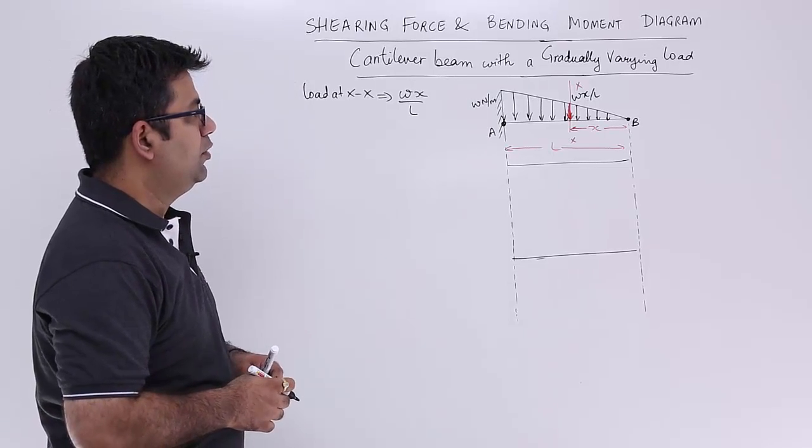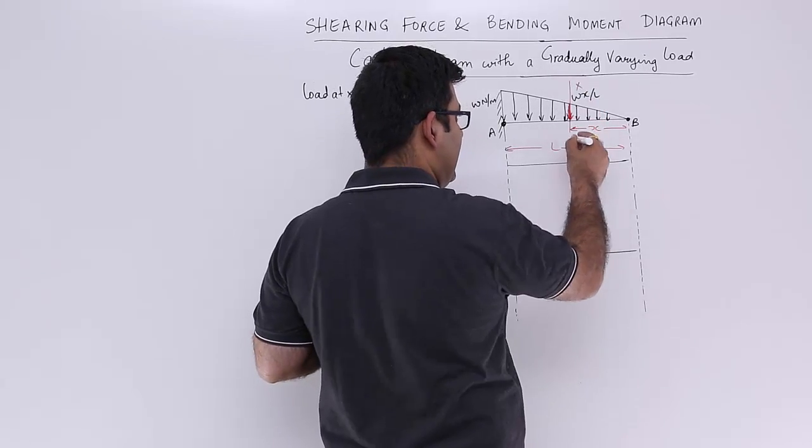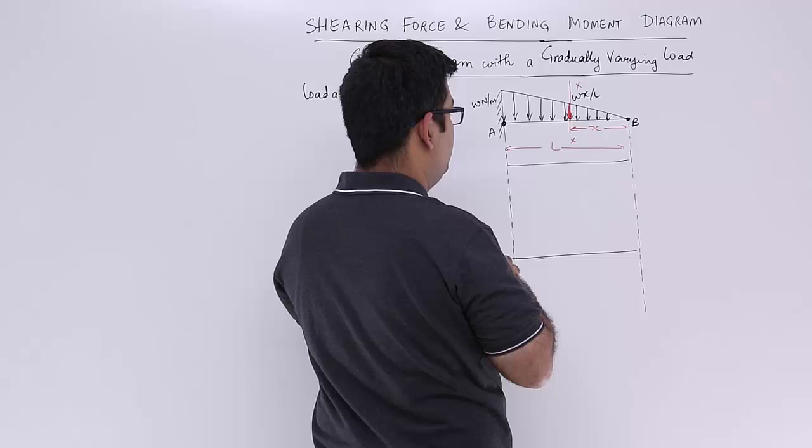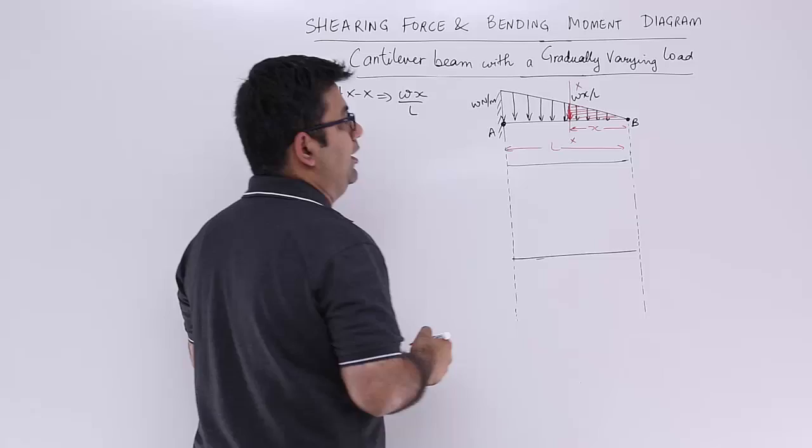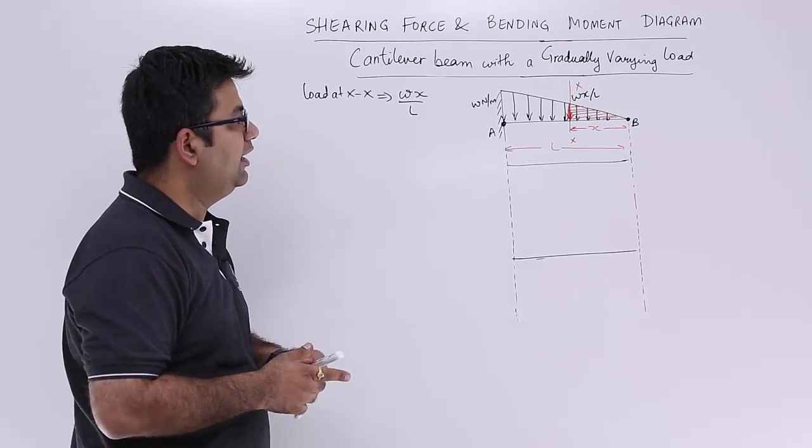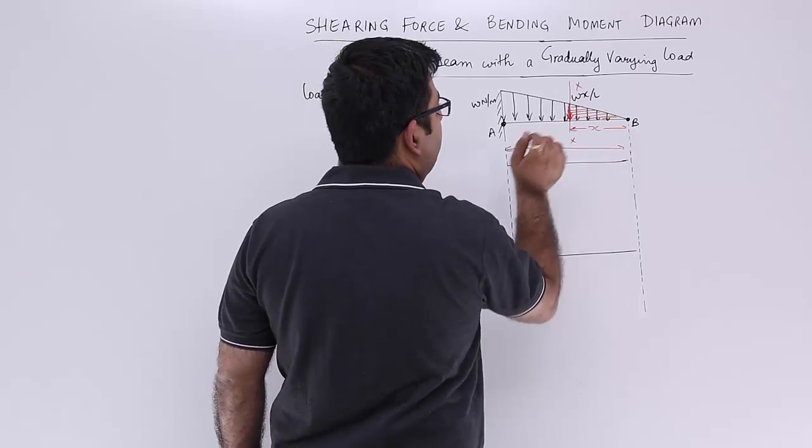Now what would be the total load between this section? So I am interested to find out this load. This is the load, that is the area. This red colored area would be the total load for this much variation of load.